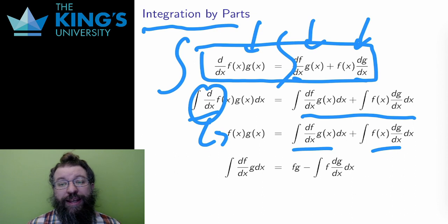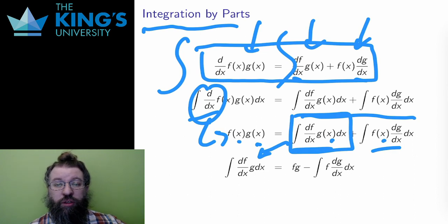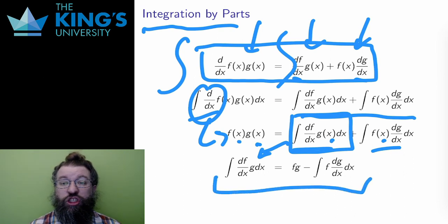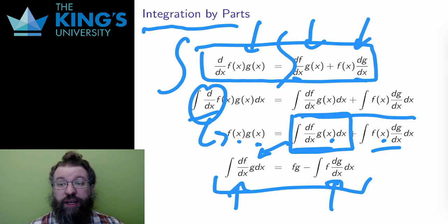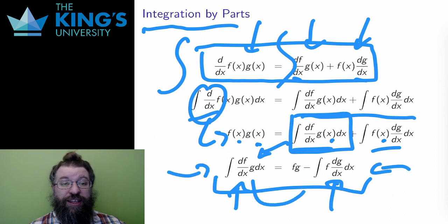Instead, what I can do is solve for one of the two integrals on the right. I'll isolate the first. I am dropping the bracket x notation for the functions, but that's only a notational change to be more concise, and is a pretty common notational change we make when we understand that these are functions of some variable. The result of the algebra is a new equation which relates two integrals: the integral of df/dx times g, and the integral of f times dg/dx.